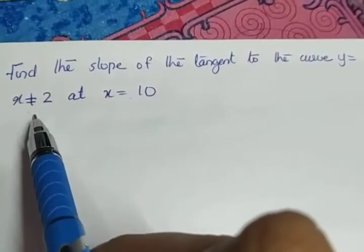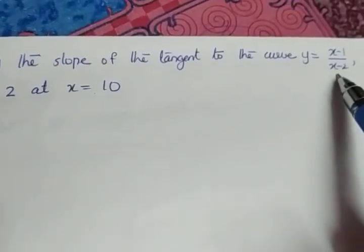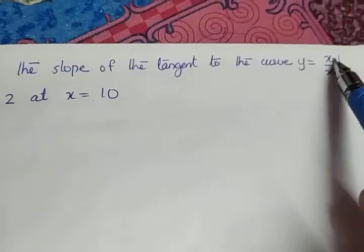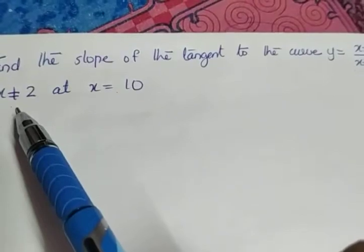Why this condition is given, x not equal to 2? When x equals 2, what about the denominator? 2 minus 2 becomes equal to 0. If the denominator is 0, this term does not exist. That is the reason why the condition x not equal to 2 is given.